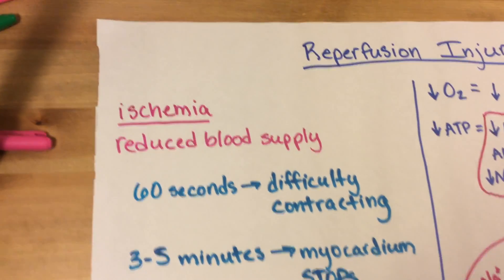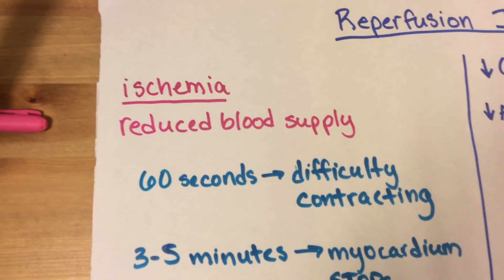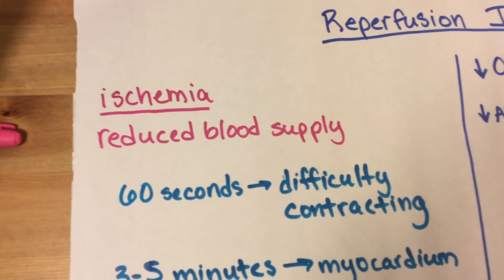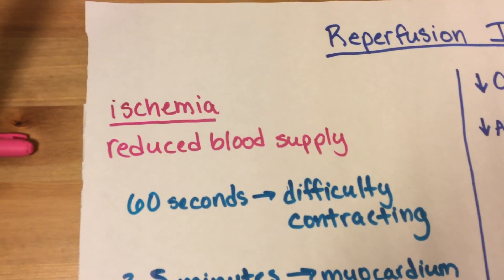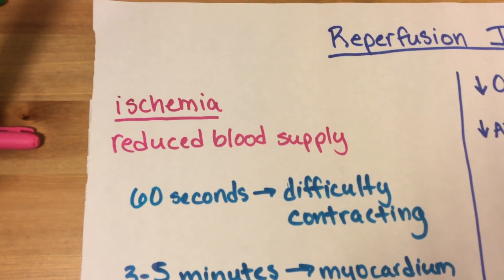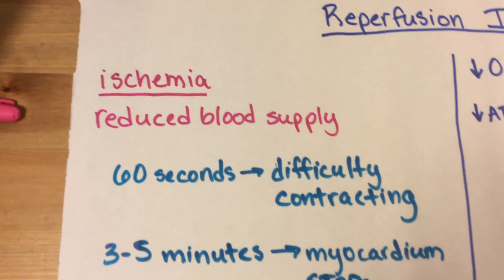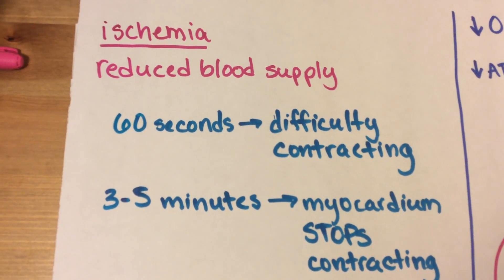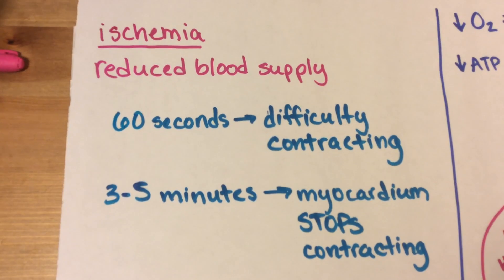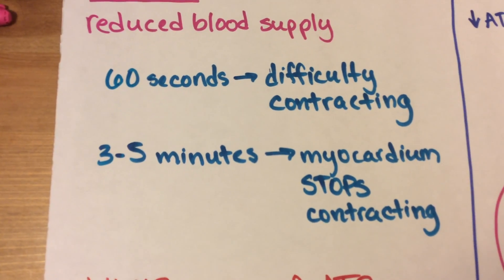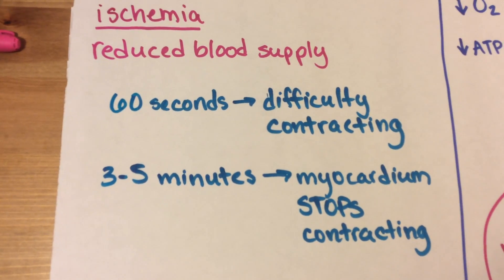First we need to understand what ischemia is, and that is reduced blood supply. So if you have a myocardial infarction, for example, where there's something blocking an artery going towards the heart, that's going to cut off the blood supply. Within 60 seconds your heart is going to have difficulty contracting and it's going to start to turn pale. After three to five minutes the myocardium stops contracting completely, so your heart stops beating.